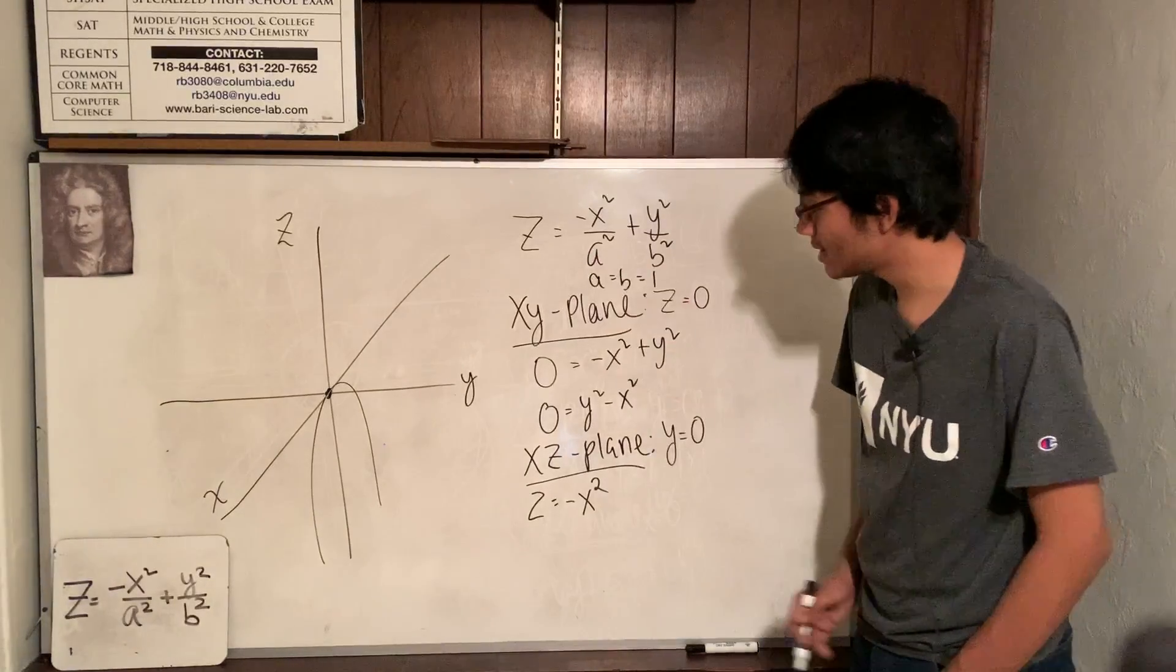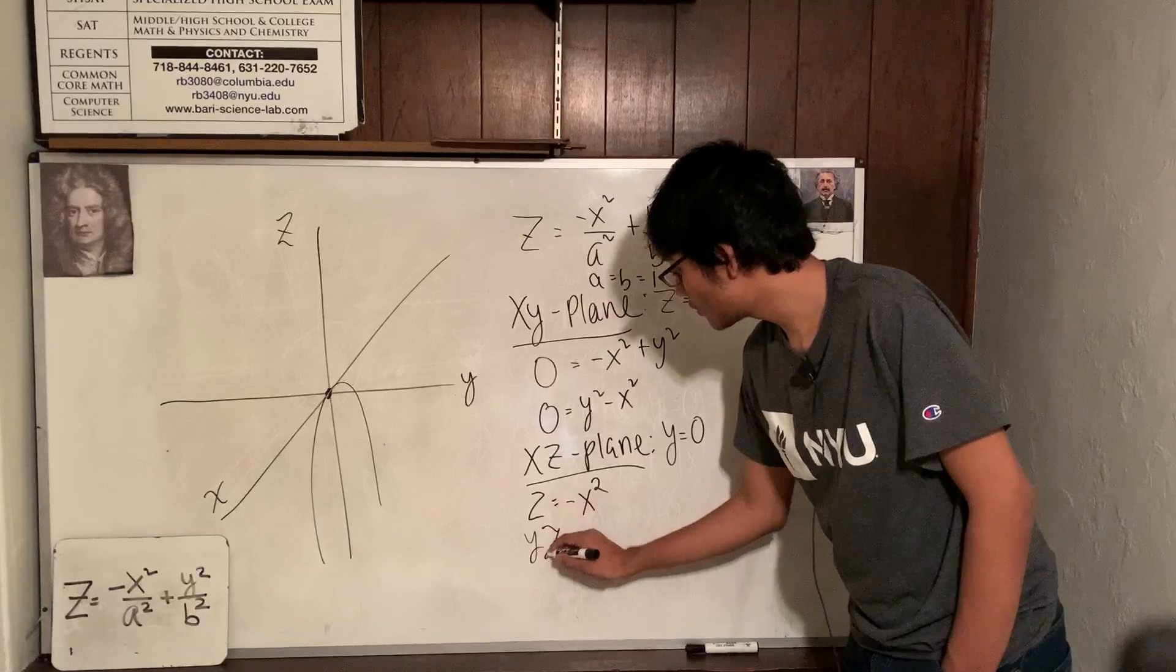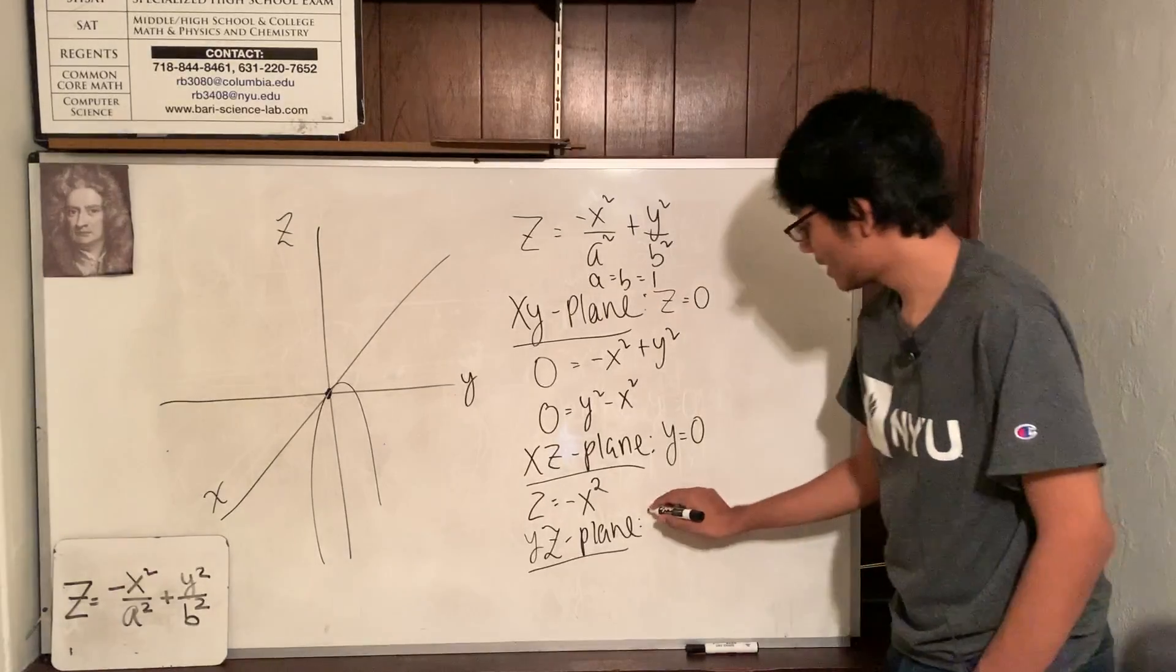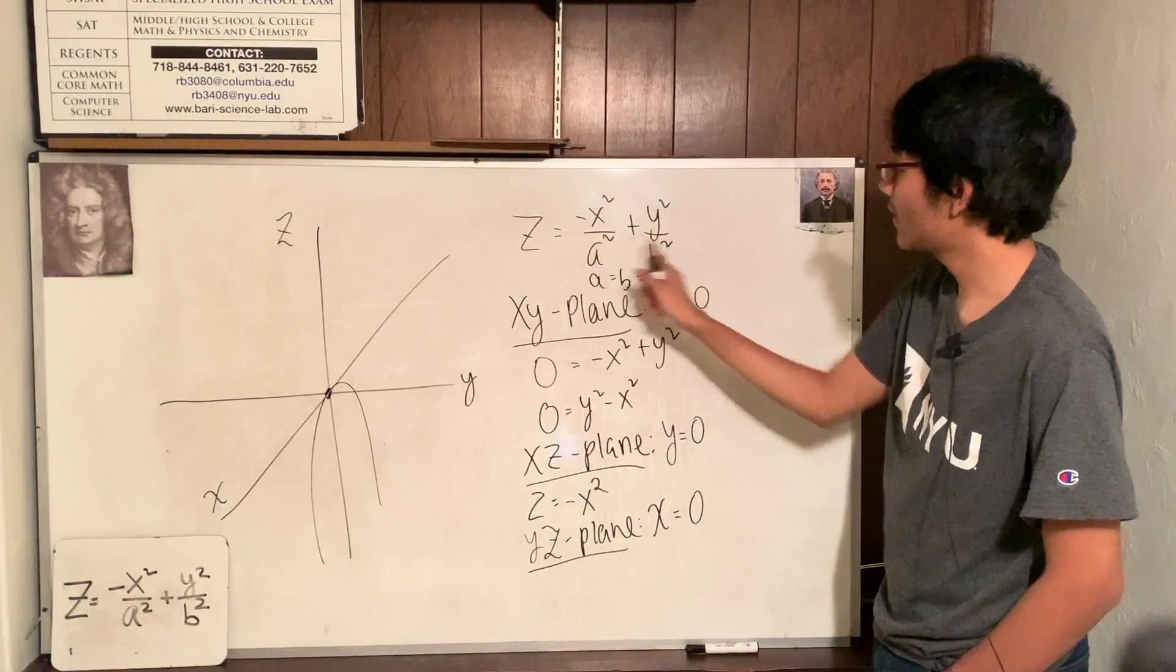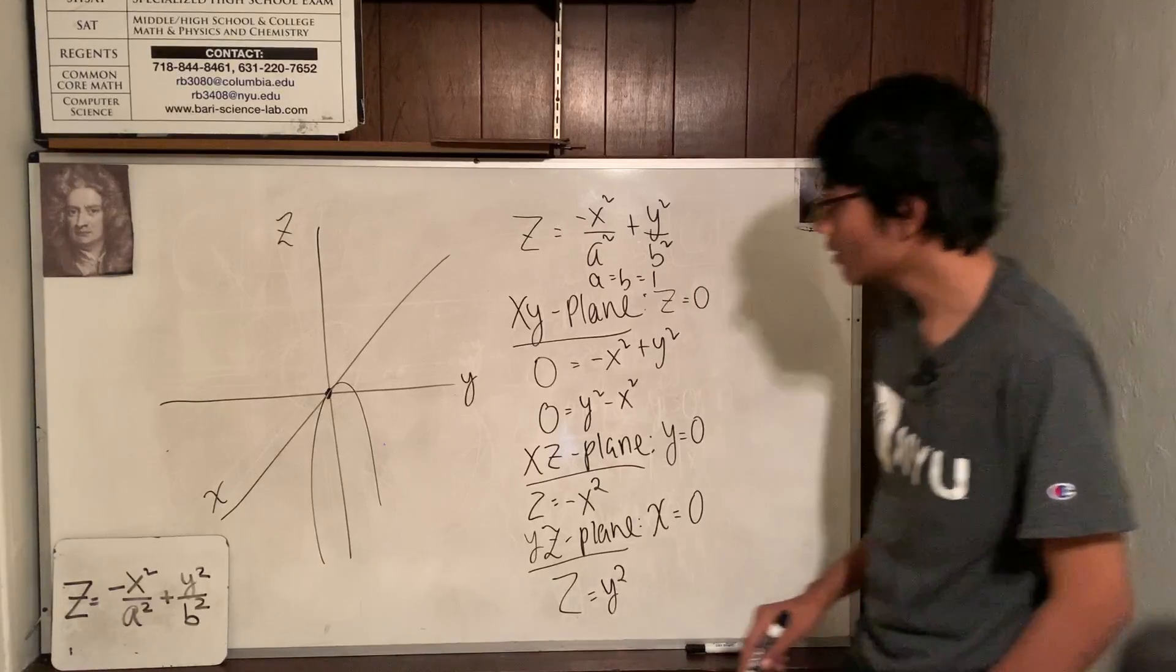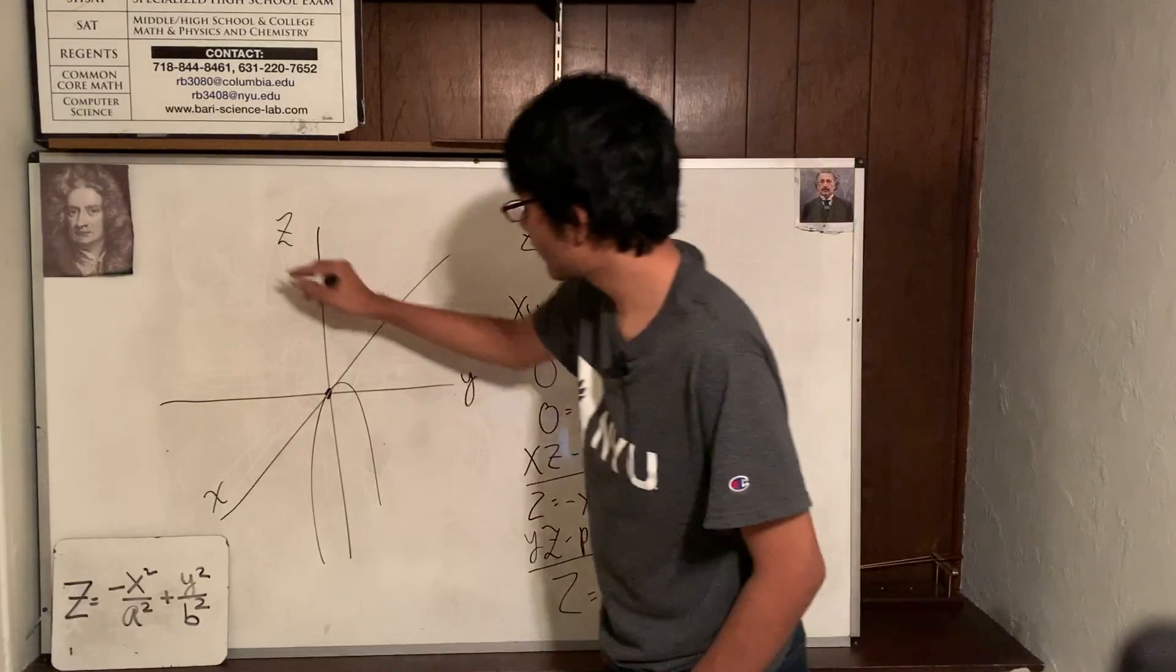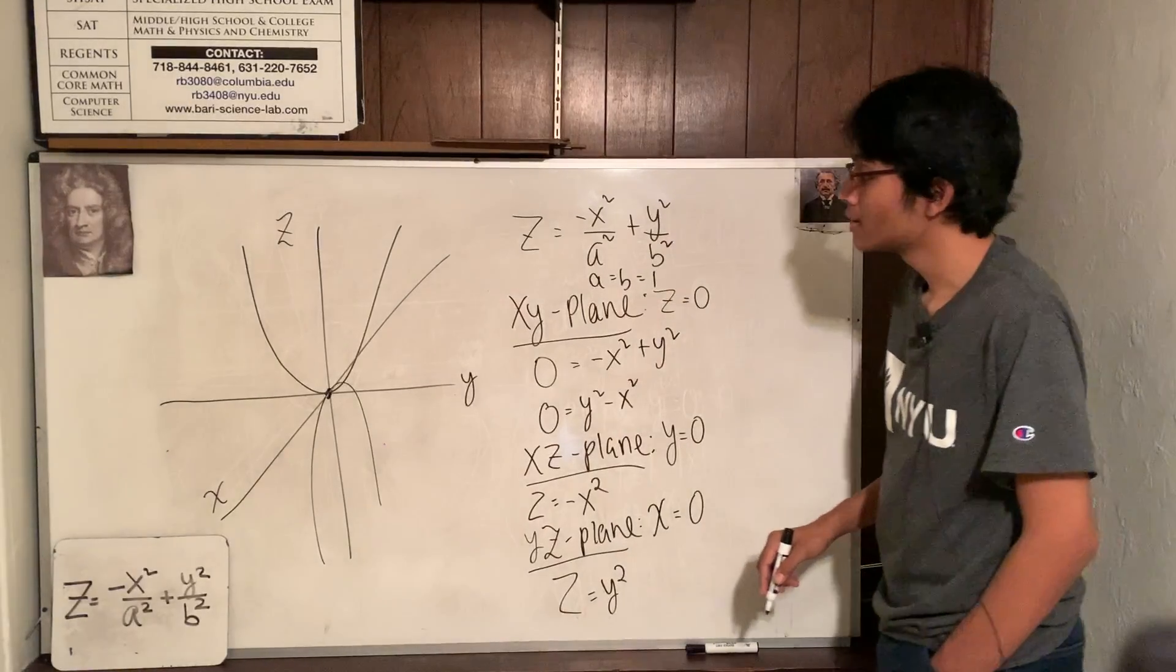So that's the xz cross section. We're just left with the yz cross section on the yz plane. And to find that cross section, I know what variable I got to fix. And that's the x variable. Fix it to zero. Take this term, pop it out. I have z equals y squared. And z equals y squared, what is that? Well, if you come over to the yz plane, that's just a parabola.